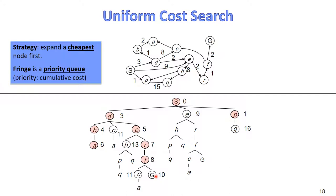We only stop and declare success when we pop the goal state from the fringe. G has cost 10, but E has cost 9, so the next to expand is E into H and R. Now the goal state has the least cost, so we pop it, test it, and it is the goal — we declare success. The solution found is S → D → E → R → F → G.